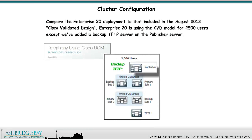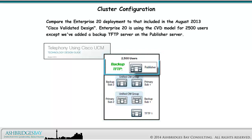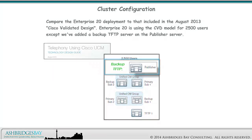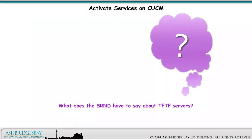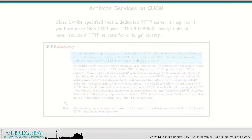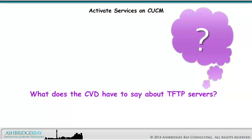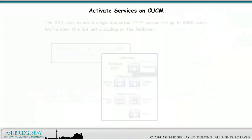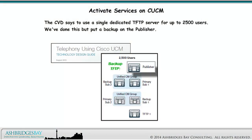Compare the Enterprise 20 deployment to that included in the August 2013 Cisco Validated Design. Enterprise 20 is using the CVD model for 2,500 users, except we've added a backup TFTP server on the publisher server. Older SRNDs specify that a dedicated TFTP server is required if you have more than 1,250 users. The 9.0 SRND says you should have redundant servers for a large cluster. The CVD says to use a single dedicated TFTP server for up to 2,500 users; we've done this, but put a backup on the publisher.